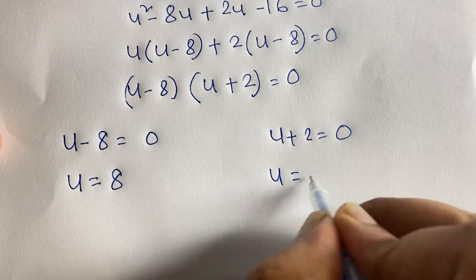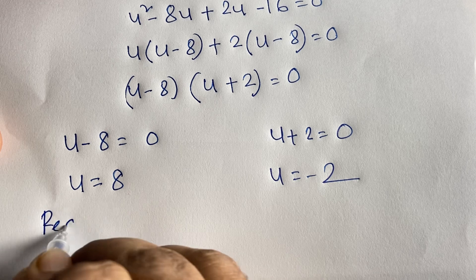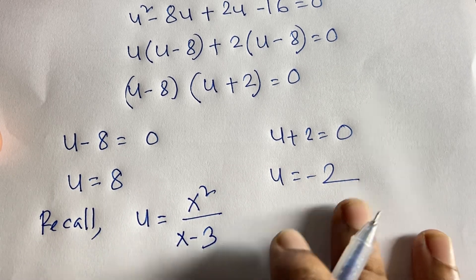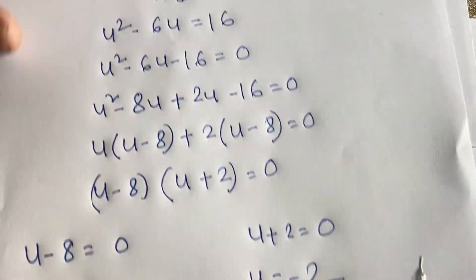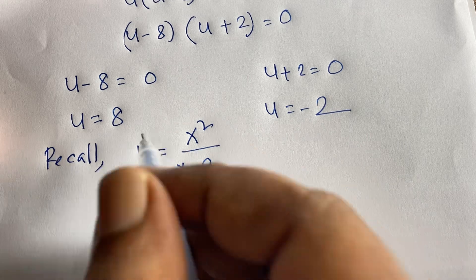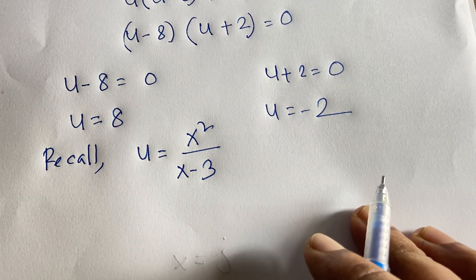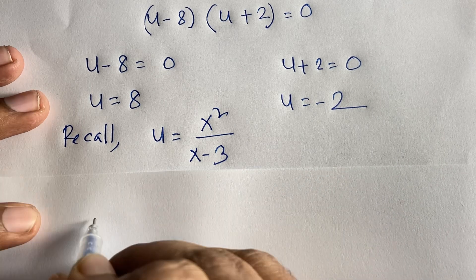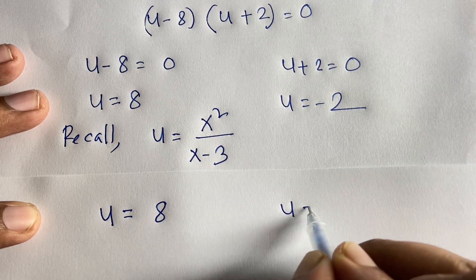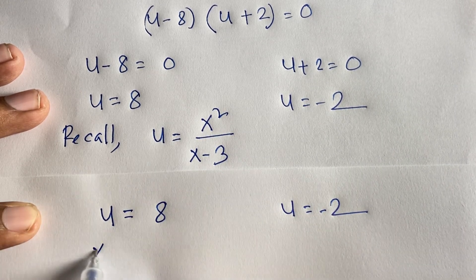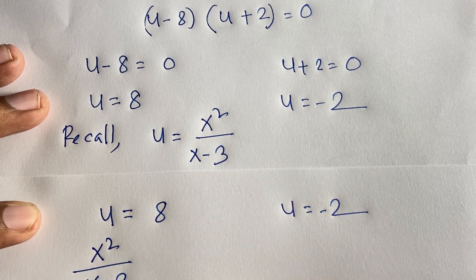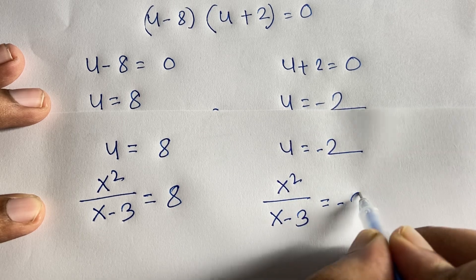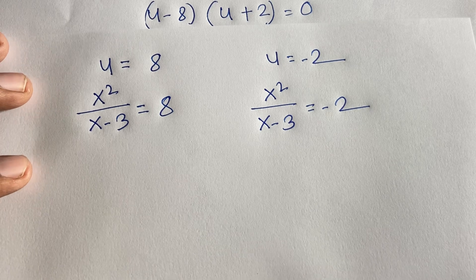So u = 8 or u = -2. Recalling that u = x²/(x-3), we substitute back. Case 1: x²/(x-3) = 8. Case 2: x²/(x-3) = -2.